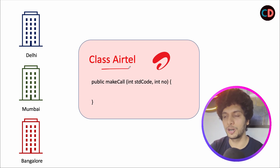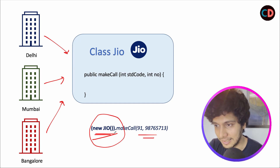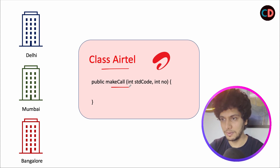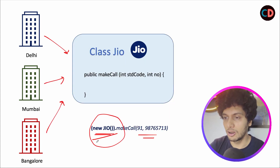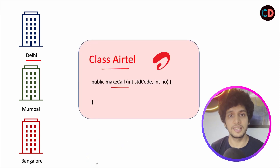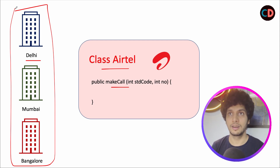In order to use Airtel's service, we need to replace all those instances where Jio was being consumed. There could be cases where the make call method of the Jio class is different from the make call method of the Airtel class. This fix has to be done across all three concrete high-level classes — Delhi, Mumbai, and Bangalore — replacing new Jio with new Airtel and making the call to the make call method. So this becomes a problem: whenever the service changes, the high-level definition of our classes has to be altered, and this is not a sustainable model.